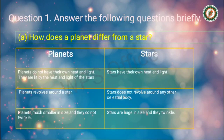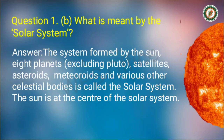Question number 1b: What is meant by the solar system? The answer is: the system formed by the sun, eight planets, satellites, asteroids, meteoroids, and various other celestial bodies is called the solar system. The sun is at the center of the solar system.